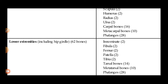The lower extremity starts from the hip. The hip is also called the innominate bone, coxal bone, or pelvis. Hip is one in number. Then the thigh bone is called the femur — also one. Patella is also one. The calculation given here accounts for both sides — meaning both right and left legs.